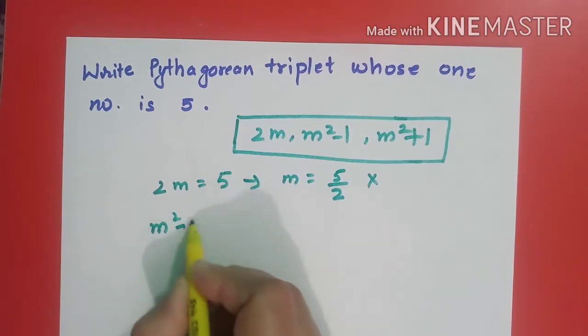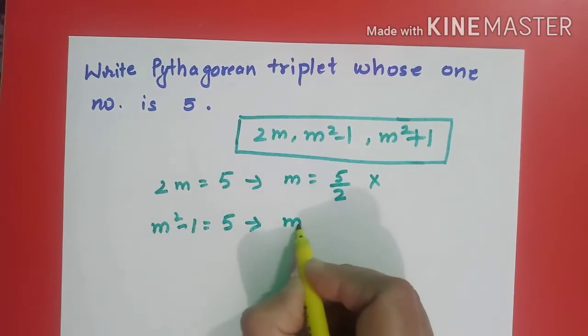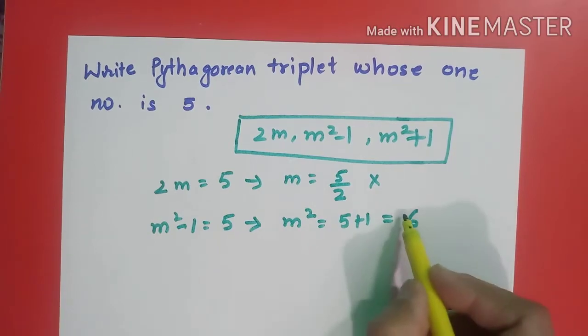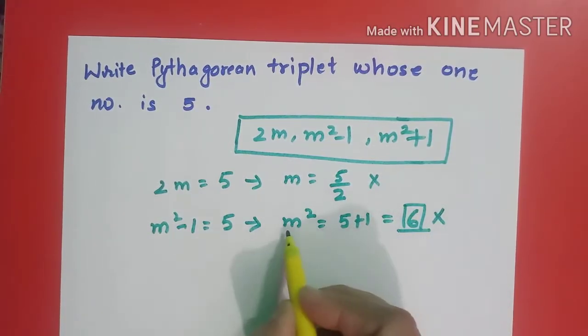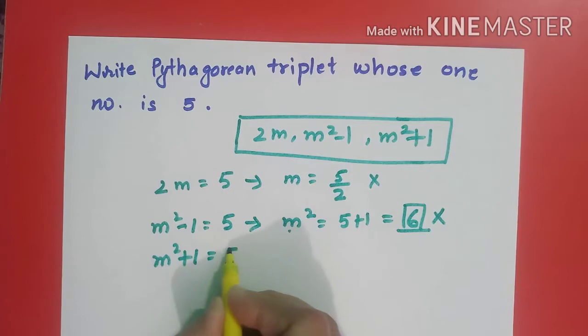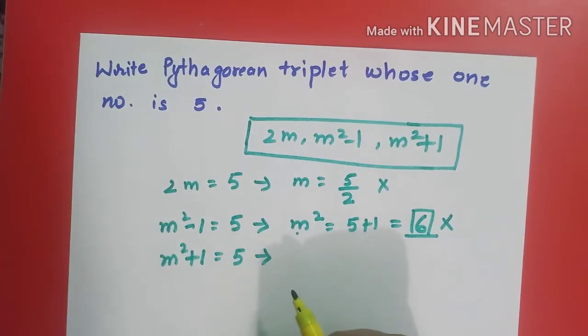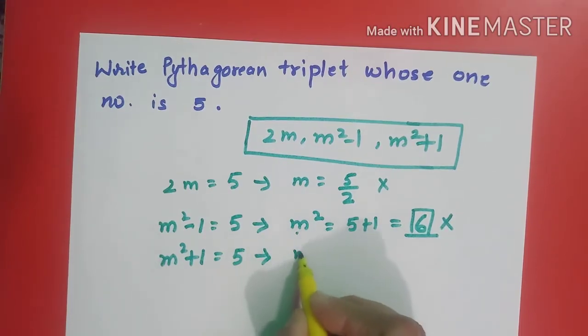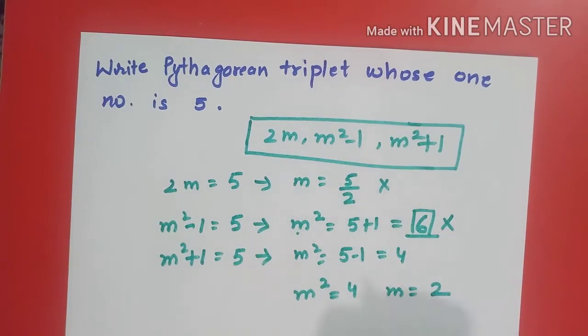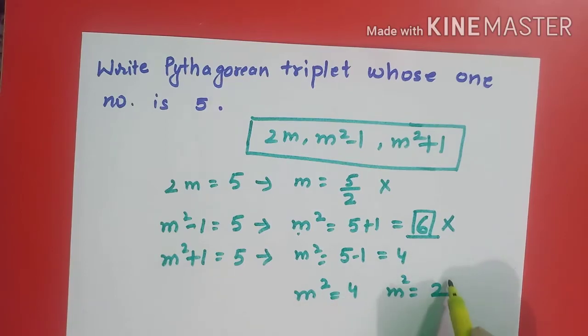Now I will come to the second number. Now I will assume that 5 is equal to m square minus 1. Let's solve it. m square is equal to 5 plus 1, which is equal to 6. So this is not possible because 6 is not a perfect square. Next, I will try the third term, m square plus 1. This is supposed to be the 5. Now m square is equal to 5 minus 1, is equal to 4. Yes! m square is equal to 4 and m is equal to 2.